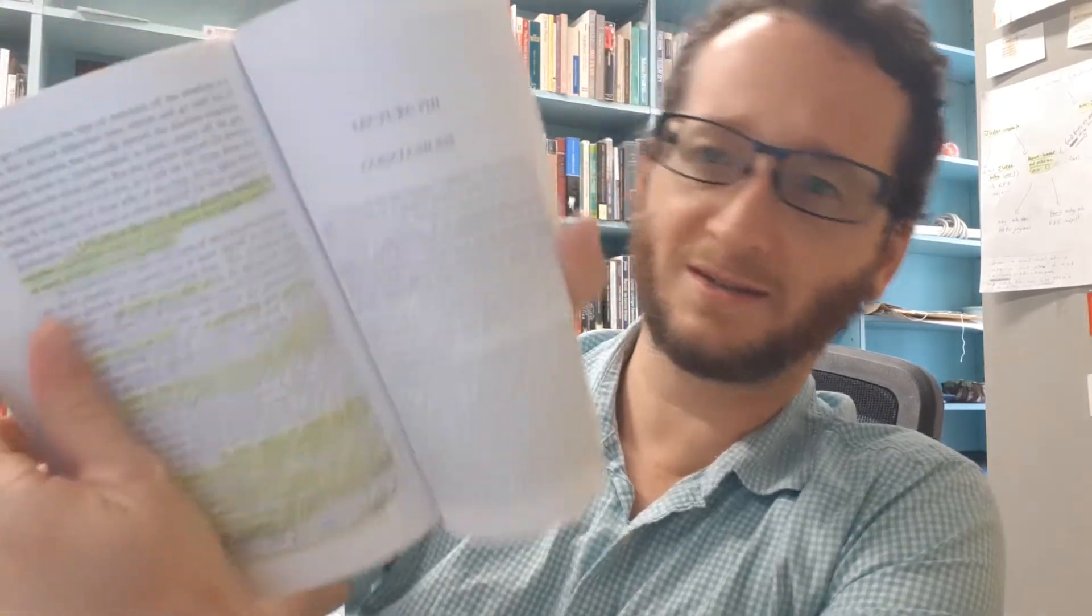William James, Pluralistic Universe, still in Lecture 8, where he's drawing his conclusions.